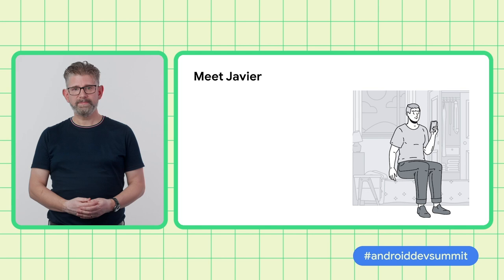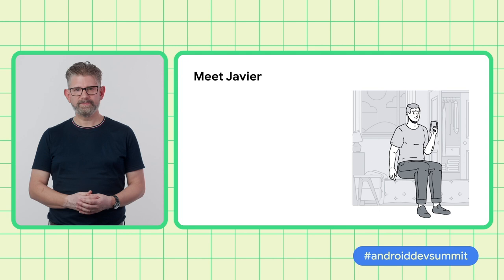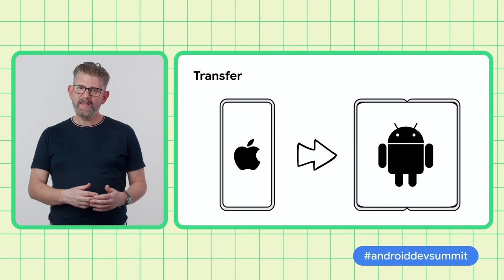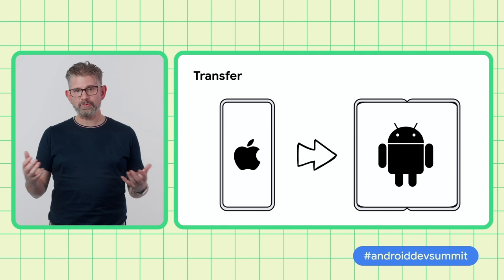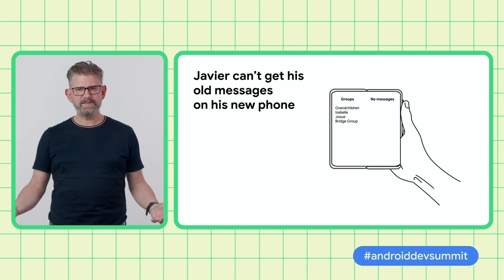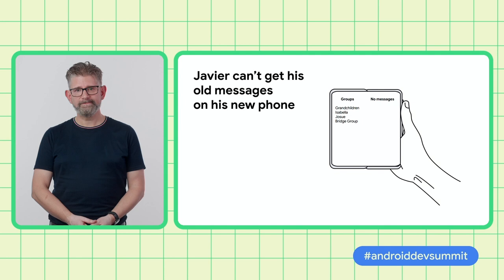Now let's meet another user. Here's Javier. Javier uses his iPhone to message his grandchildren. He's got a lot of pictures of them on there, and it means everything to him. Javier is an early adopter, and he regularly gets a new phone. He really likes the look of the new foldable Android phones — it'll give him more screen space to message and play games, as well as bragging rights with his friends. Javier transfers all of his apps and contacts and photos from his iPhone to his new Android foldable. After he transfers, he goes straight to his messaging app to look at the photos of his grandchildren on the big screen. He's devastated to find that his messaging app hasn't brought his messages across from his iPhone. He's thinking perhaps it's time to use a different messaging app.